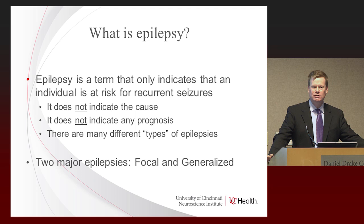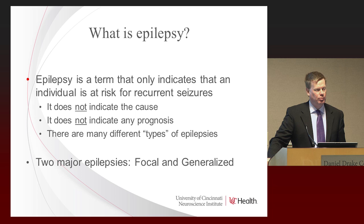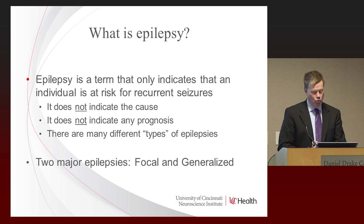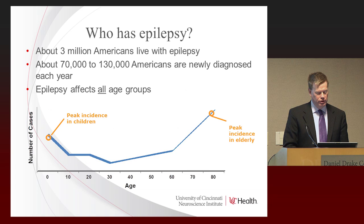That makes it a little frustrating because each individual has different types of seizures and different types of response to medication. When we see somebody with epilepsy, we try to determine if they have one of two types: focal epilepsy, where seizures arise in one region of the brain, or generalized onset epilepsy, where seizures don't arise focally. We try to make that distinction because it helps us determine what medications to use, since certain medicines are not effective for generalized epilepsies.